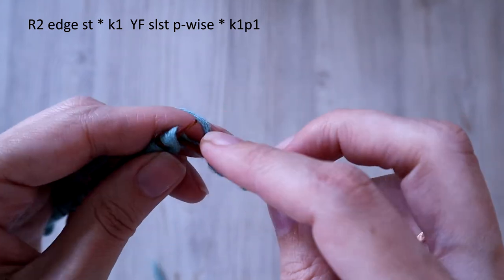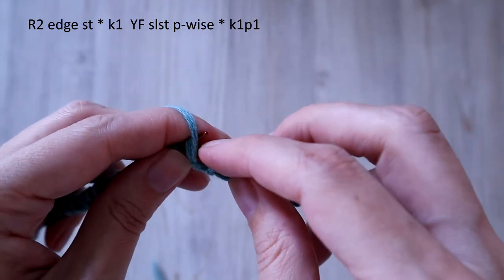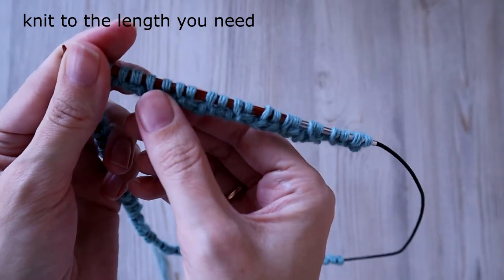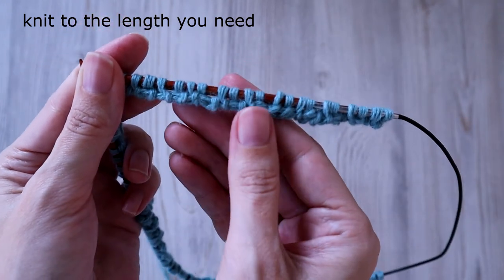Knit 1, yarn forward, slip stitch. And I'm going to continue to knit to the recreated length.